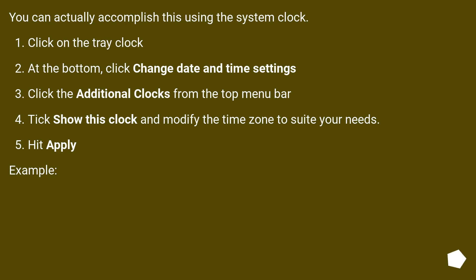You can actually accomplish this using the system clock. Click on the tray clock. At the bottom, click 'Change date and time settings.' Click 'Additional Clocks' from the top menu bar. Tick 'Show this clock' and modify the time zone to suit your needs. Hit Apply.